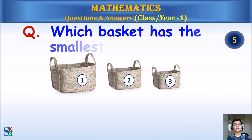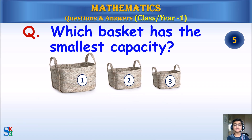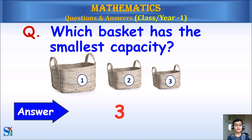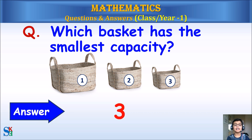Which basket has the smallest capacity — the 1st basket, the 2nd basket, or the 3rd basket? Answer: The 3rd basket has the smallest capacity.